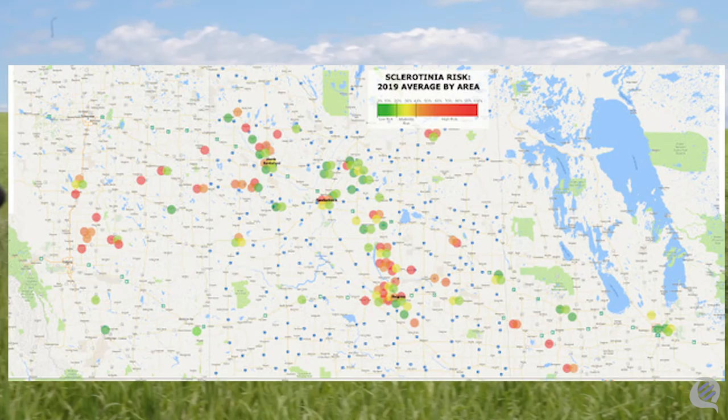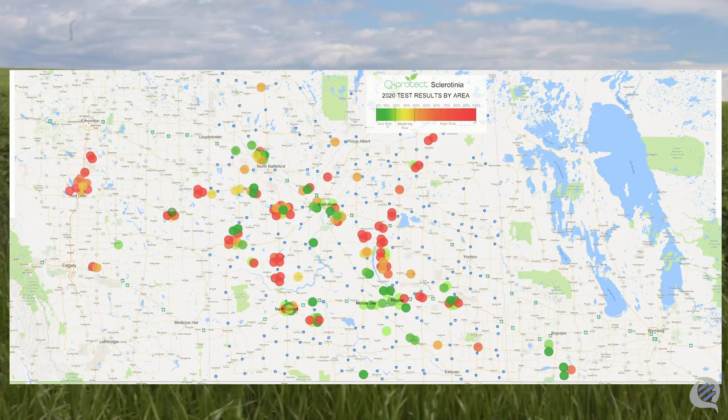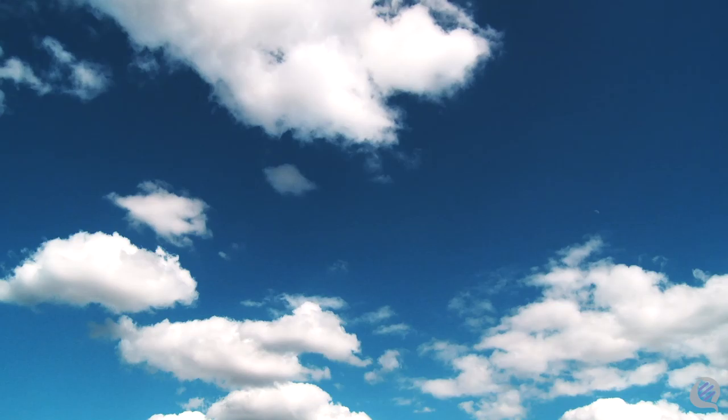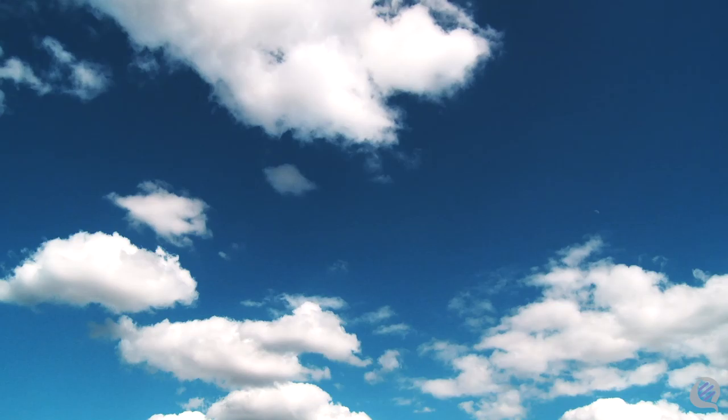Since the first season Q-Protect launched in 2016, we have tracked the results and disease prevalence over Western Canada, showing the high variability of results in the same regions. If you could take the guesswork out of your decision each year, would you? Here's how.